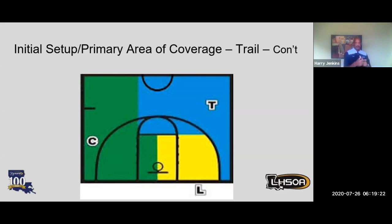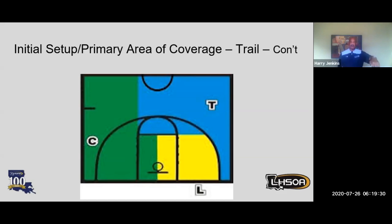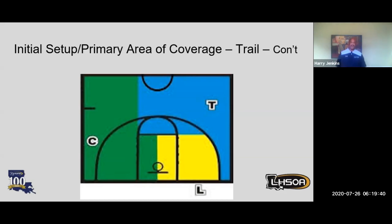There are going to be some plays where it will start clearly in trail's area, but the dribble drive will take the player toward the green area, and when the violation is called it may be in the green area. That's not center's call — trail started with it, trail had a visible count, trail stepped in, trail called the violation. Instant credibility.